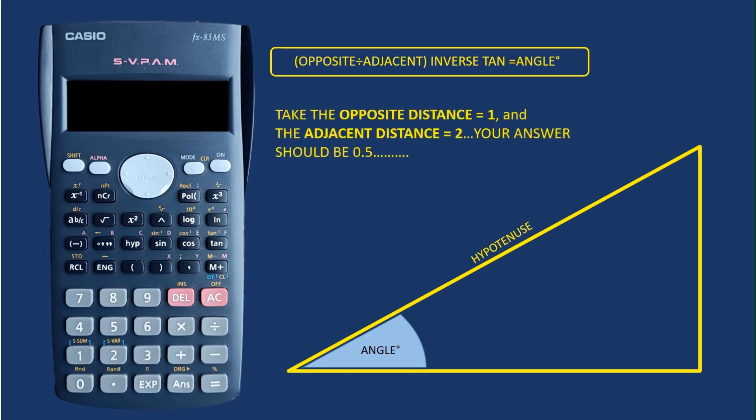Take the opposite distance as one and the adjacent distance as two. When you start off that formula, opposite divided by adjacent, you should get an answer of 0.5.